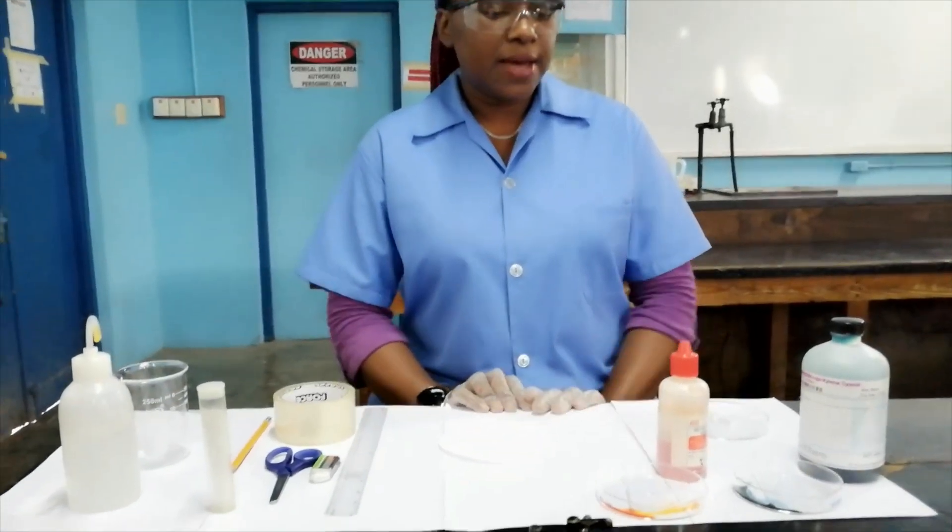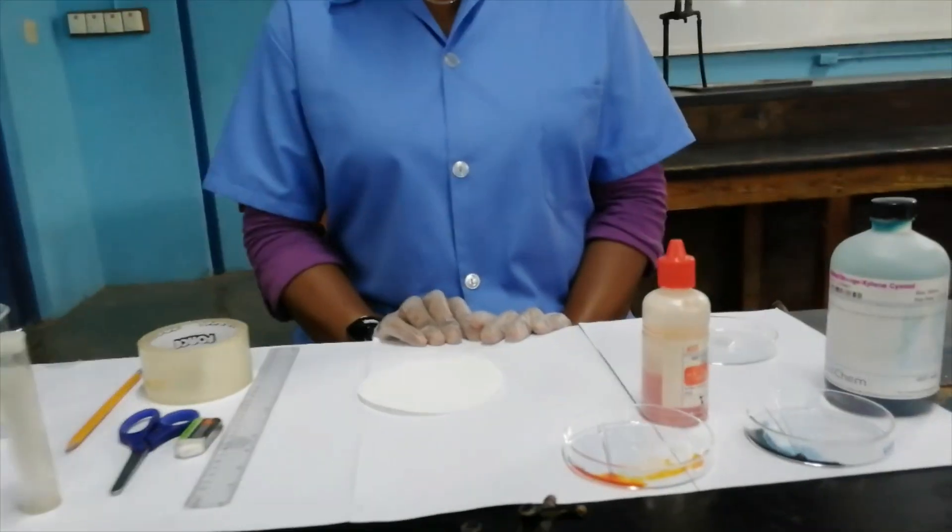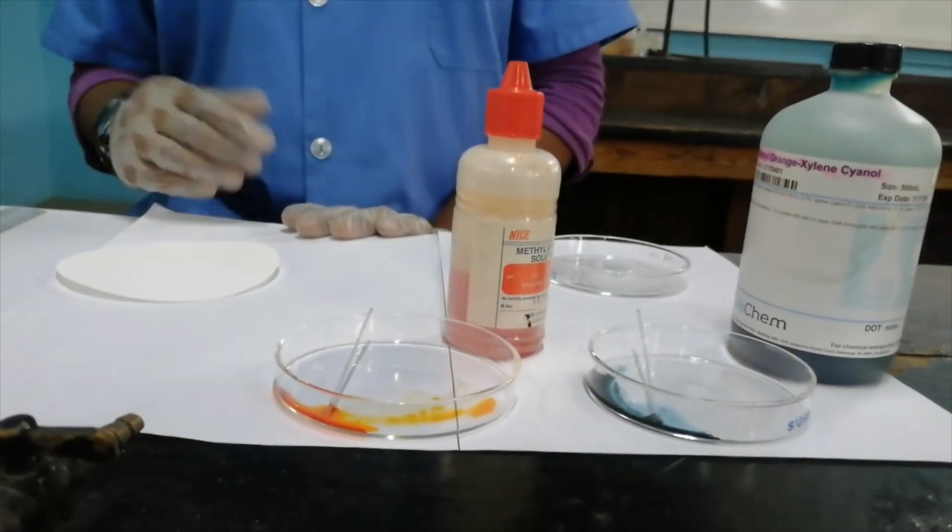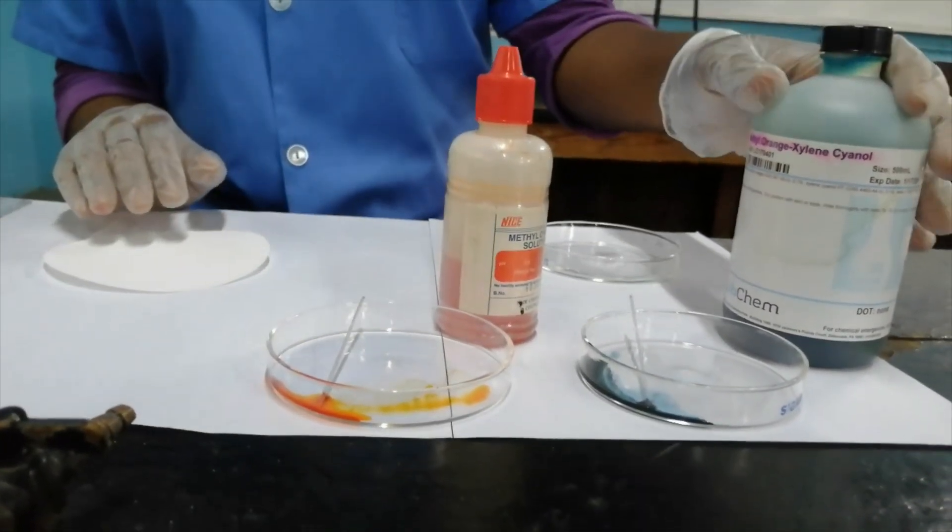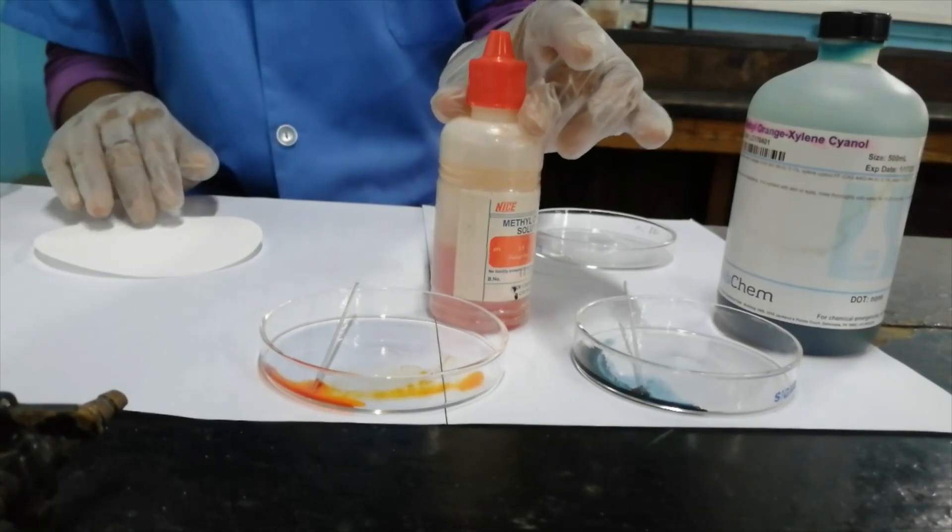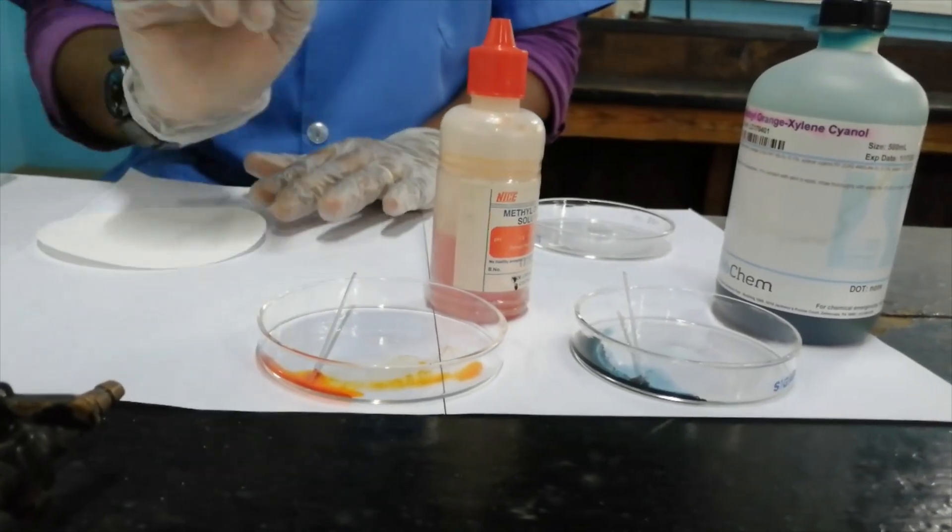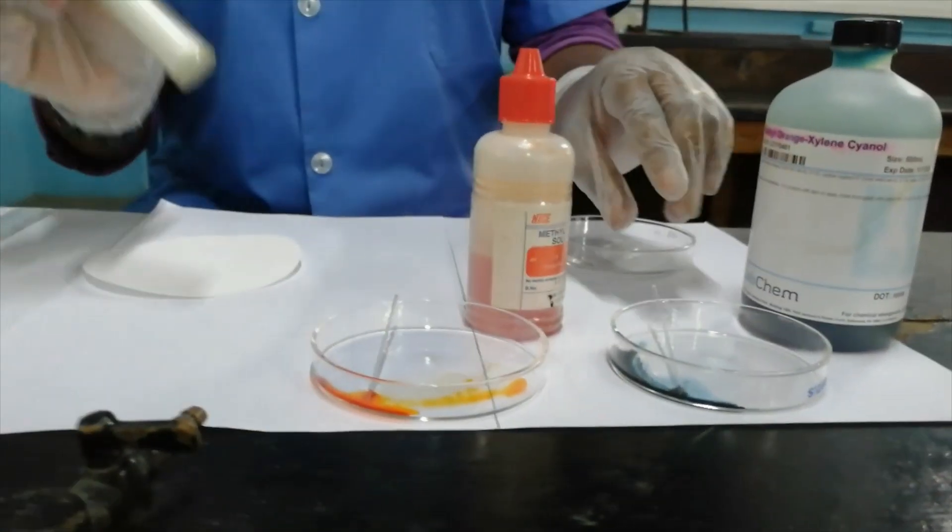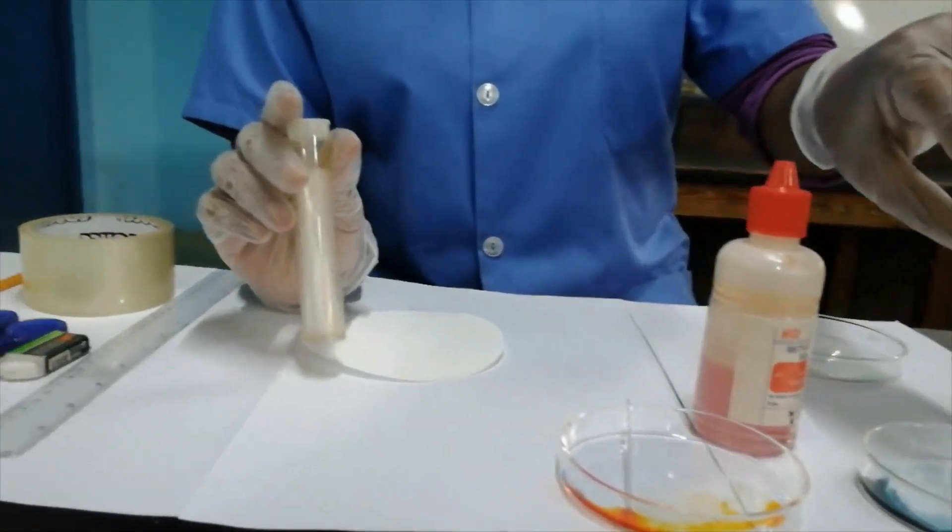Let's look at the apparatus and materials we'll be using. The materials are green methyl orange and methyl orange, and the apparatus includes petri dishes and capillary tubes.